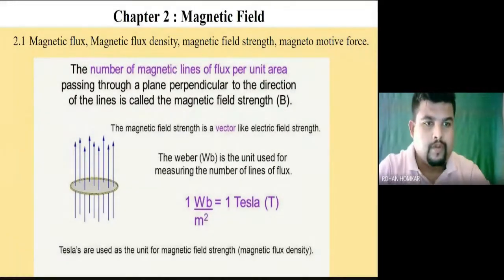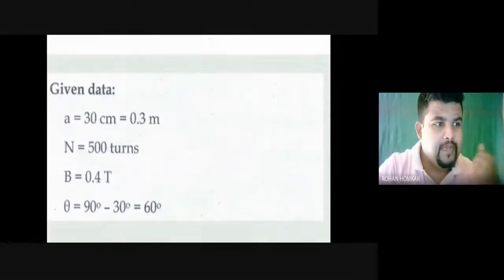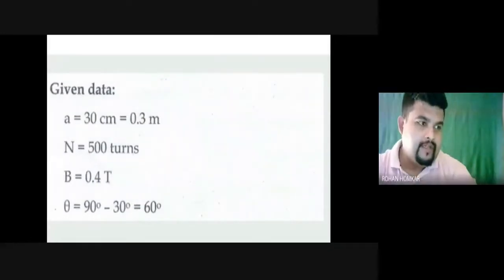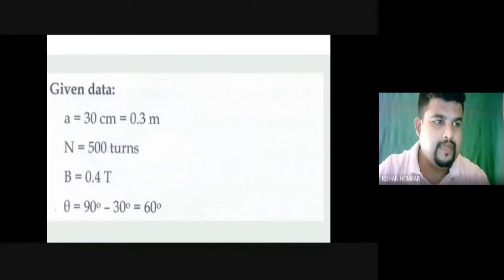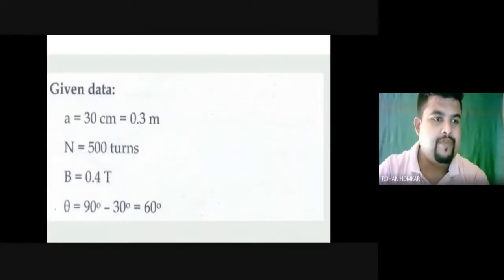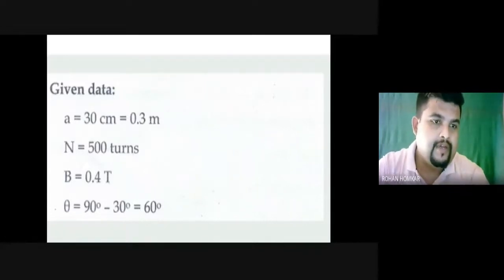Now we will have a small numerical. The given data includes the number of turns N. N is nothing but the number of turns. If we are finding magnetic flux for one turn and we want to identify the magnetic flux for the total number of turns, then we simply multiply the number of turns by the amount we received. So in the formula for φ, we multiply φ by N to get the answer.